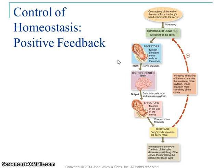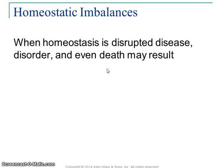Positive feedback is the opposite — once there's a change, the body wants to keep going in that same direction. For example, uterine contractions during childbirth get stronger and stronger. They stretch, which tells the brain to contract more, and oxytocin is released, causing more contraction until the baby is born. Another example is blood clotting with platelets: once you have a damaged blood vessel, platelets come in and release chemicals to recruit more and more platelets until a clot forms. Each chapter will look at homeostatic imbalances — when homeostasis can't be maintained, leading to disease, disorders, or even death.